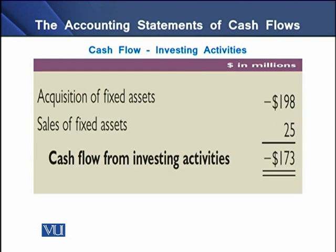To determine investing cash flows, the firm needs to prepare an investing activities section. By investing activities, we mean the acquisition and disposal of fixed assets. On the screen, you can see that from investing activities, the firm has generated cash flows of negative $173 million.